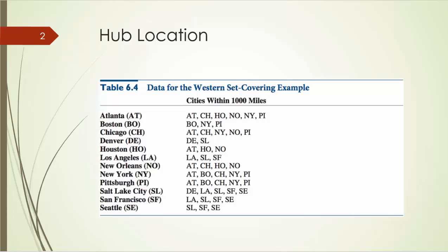This table gives us the data for the Western set covering example. For example, let's take a look at Atlanta. Atlanta is covered by itself, of course, Chicago, Houston, New Orleans, New York, and Pittsburgh. All those cities are within 1,000 miles of Atlanta.